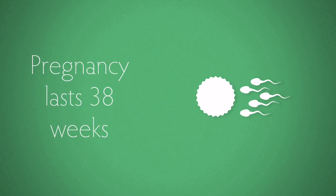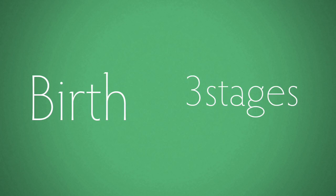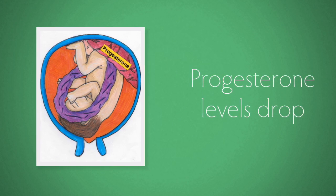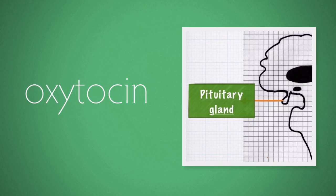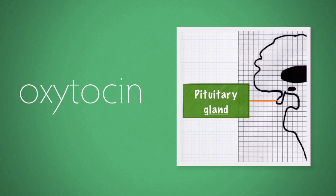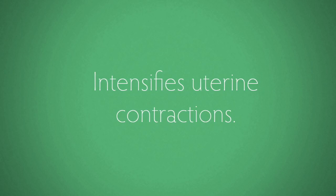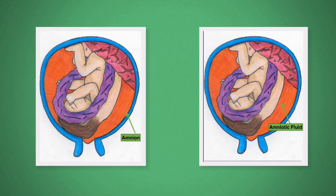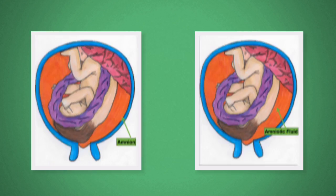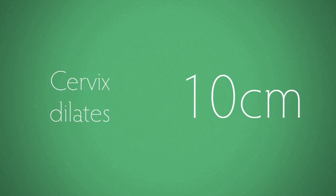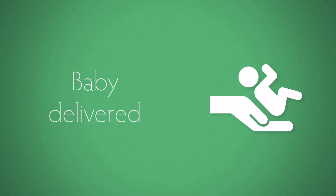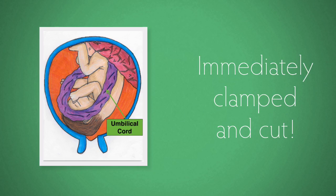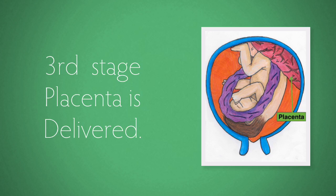Pregnancy lasts 38 weeks dated from fertilization. There are three stages involved in giving birth. Stage 1 is the longest: the placenta stops producing progesterone so progesterone levels drop, and oxytocin secreted by the pituitary gland stimulates and intensifies contractions of the uterus walls. Intense contractions cause the amnion to burst and amniotic fluid leaks out. By the end of stage 1 the cervix should have dilated to 10 cm. Stage 2: the baby passes out through the vagina and is delivered, and the umbilical cord is clamped and cut. Stage 3: the placenta is delivered.